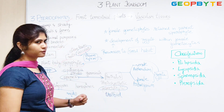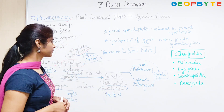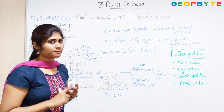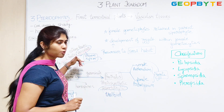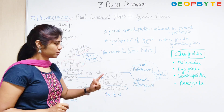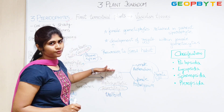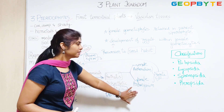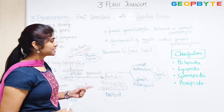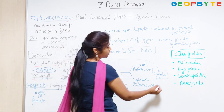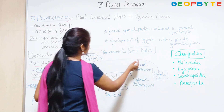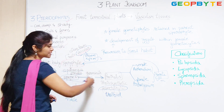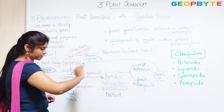The Prothallus is photosynthetic. It bears the male and female sex organs. In the sporophyte there are no sex organs, whereas in the gametophytic phase we have sex organs — the antheridium and archegonium. Once fertilization happens to produce a zygote, this zygote will again lead to the production of a sporophyte, and this cycle keeps going continuously.